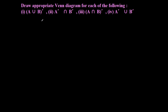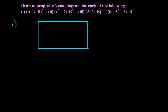Let's try to solve some Venn diagram drawing problems of complement operation. The question is: draw an appropriate Venn diagram for each of the following. For the first one, I am going to solve A union B complement. Before drawing the Venn diagram, we have to make a rectangle. Let me suppose this is U and A union B complement.